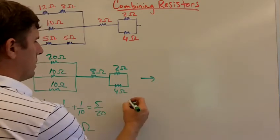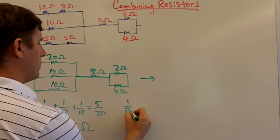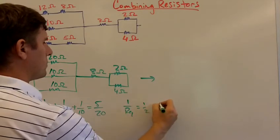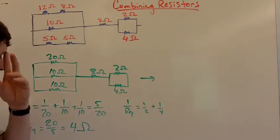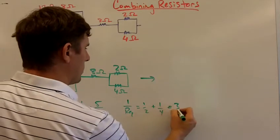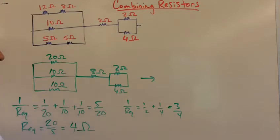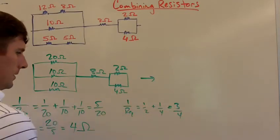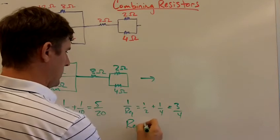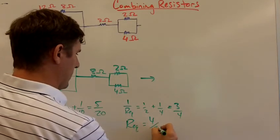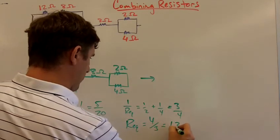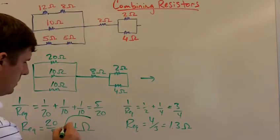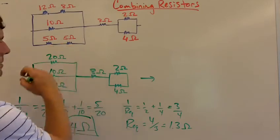Now let's do this one. Here we have 1/Req = 1/2 + 1/4, which is 3/4 (two fourths plus one fourth is three fourths). Req then equals 4/3, which is 1.3Ω. So this is the equivalent resistance of all of this.